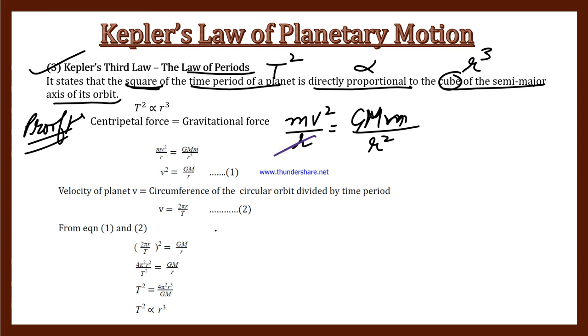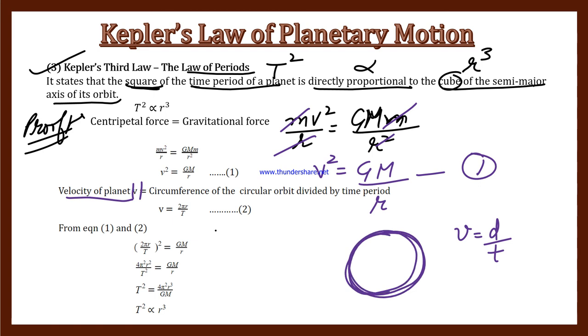Now the velocity of the planet is equal to the circumference of the circular orbit divided by the time period. Velocity equals distance over time. The distance is the circumference of the circle, which is 2πR, and the time is the time period T. This is our second equation.